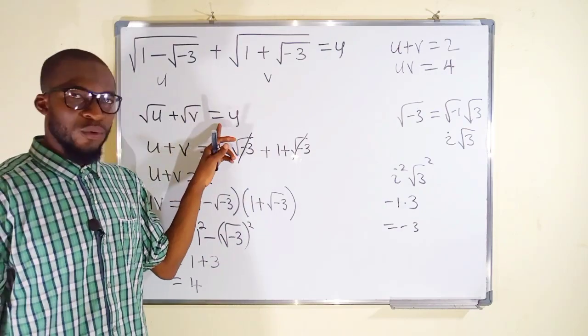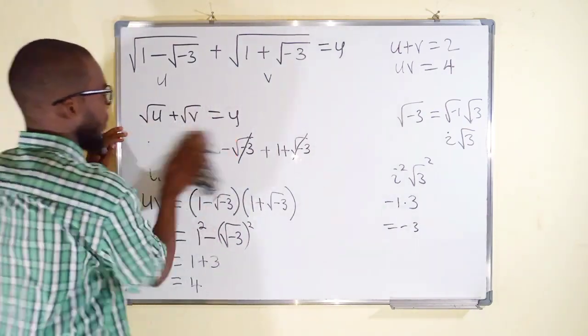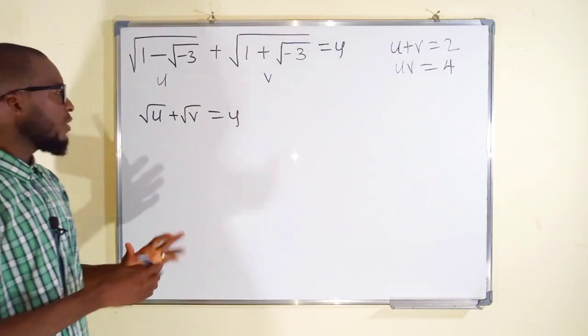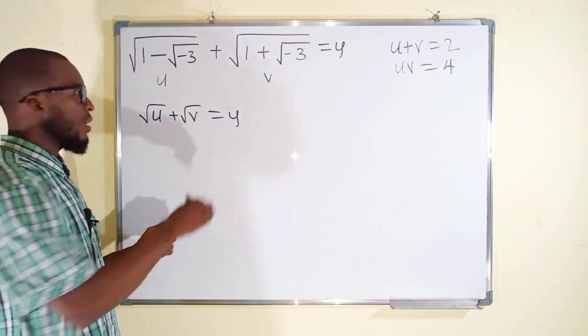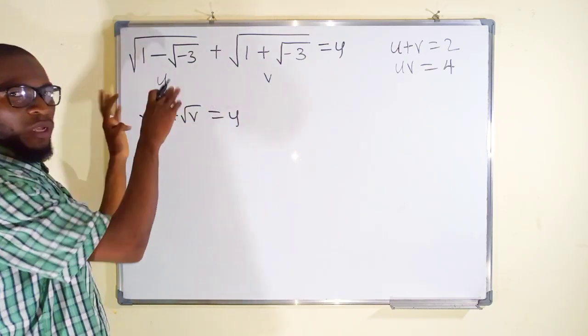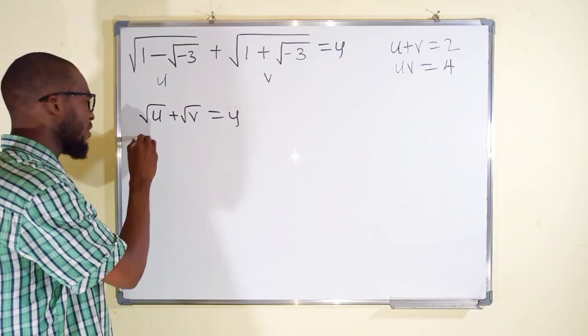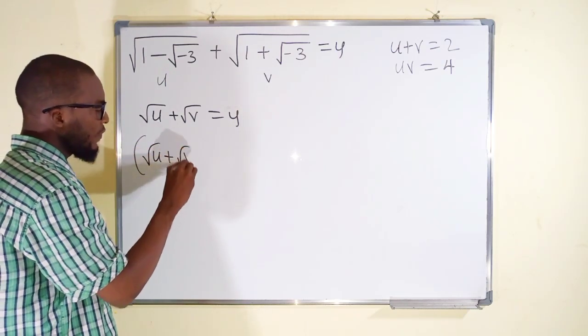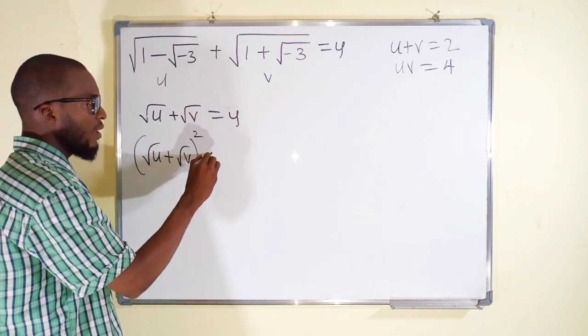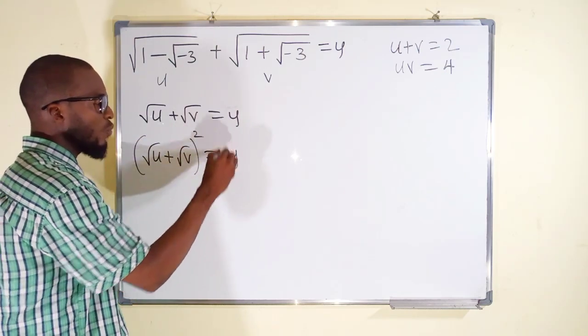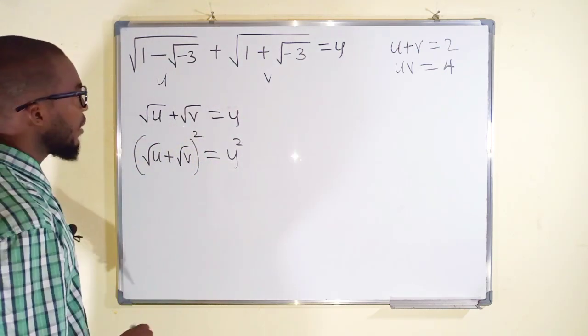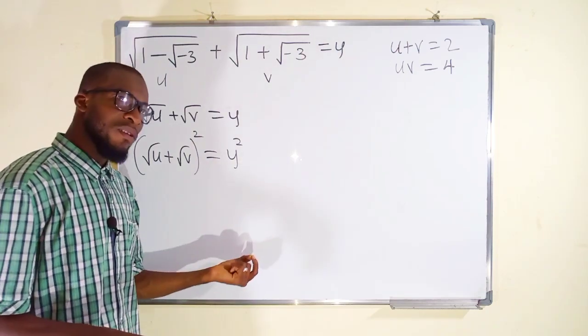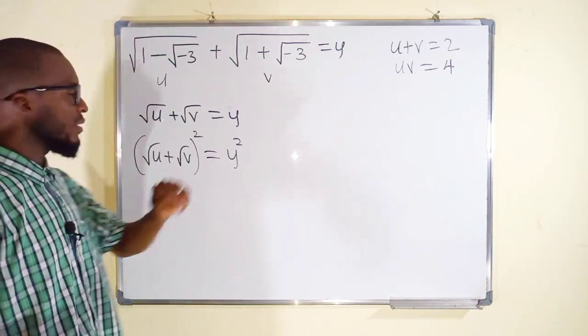Now let us square both sides in order to eliminate the square root from the left hand side. So we have (√u + √v)² and this is equal to y². In the end, whatever the value of y is, is said to be the solution to the left hand side.